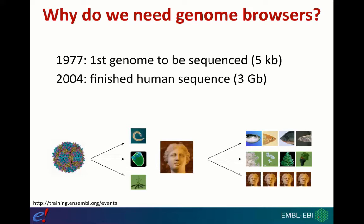Since then, sequencing technology has increased and improved in efficiency, cost, and speed to the point where we can sequence genomes in a very short space of time at very low cost. This means we're entering an age of genome data where there's almost too much to keep up with. This is one of the things Ensembl is working towards — trying to represent as many genomes for as many different species as possible. We're looking at projects like the Darwin Tree of Life and the Vertebrate Genomes Project to represent genomes and annotation for lots of vertebrate and non-vertebrate species around the world.